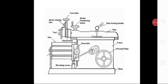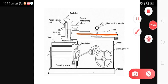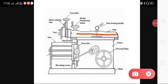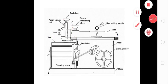Here we can see the ram. At the extreme left of the ram, the tool post is connected. At the extreme left of the tool post, the tool is fixed. This tool is a single point cutting tool.